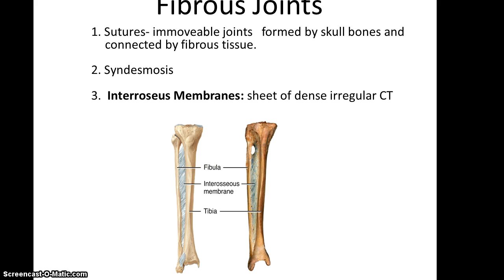Then there are the interosseous membranes. These are sheets that go between certain bones such as the fibula and tibia, or the ulna and radius. Again, you expect a little bit of movement, a little bit of twisting, but not much.